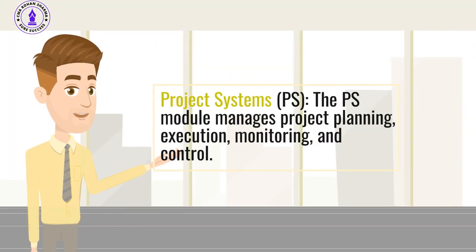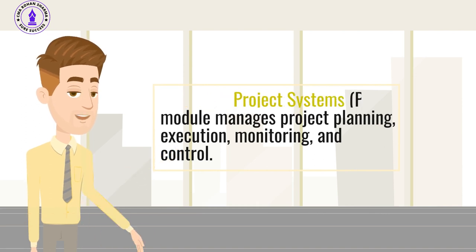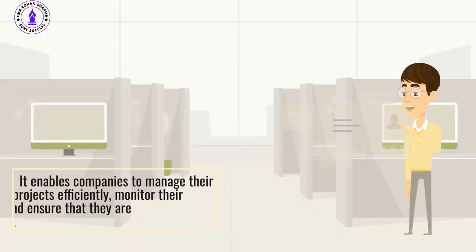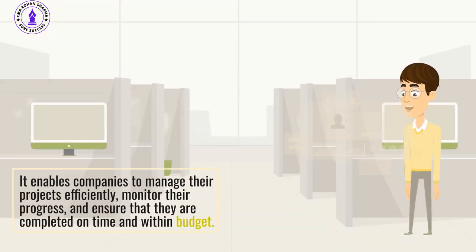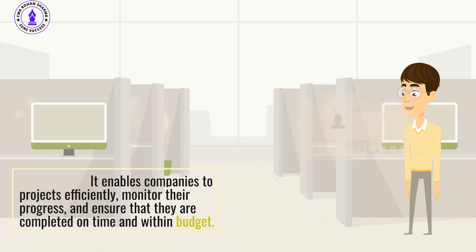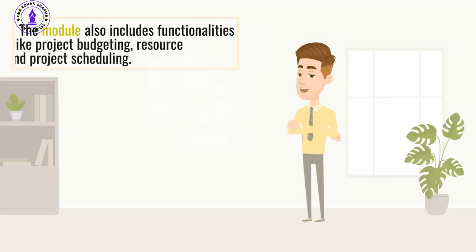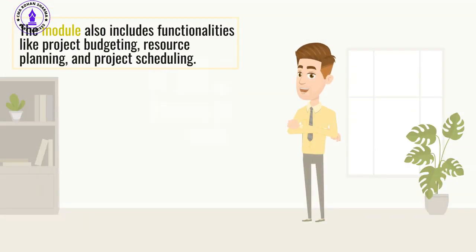Project Systems (PS): The PS module manages project planning, execution, monitoring, and control. It enables companies to manage their projects efficiently, monitor their progress, and ensure that they are completed on time and within budget. The module also includes functionalities like project budgeting, resource planning, and project scheduling.